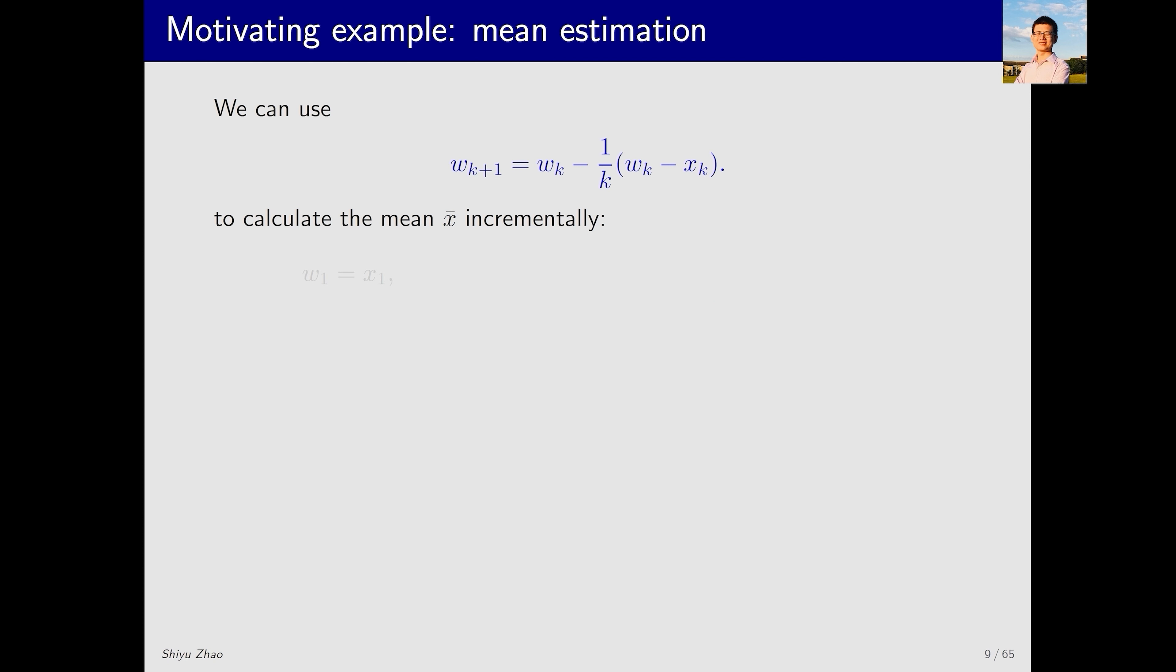Let's next verify if this algorithm is valid. Initially, we have x_1, which gives us w_1. Then what is w_2? According to the equation, w_2 equals w_1 minus 1 over 1 times (w_1 - x_1). Since w_1 is equal to x_1, this results in 0, leaving x_1. Therefore, w_2 equals x_1.